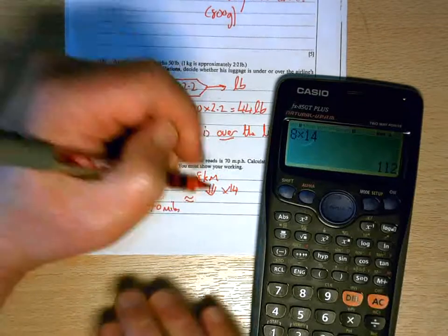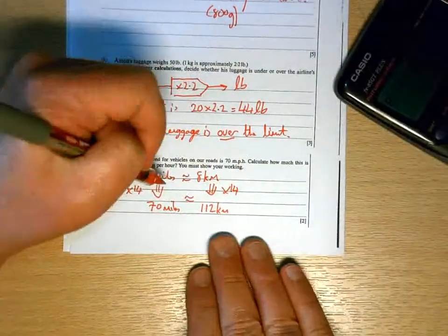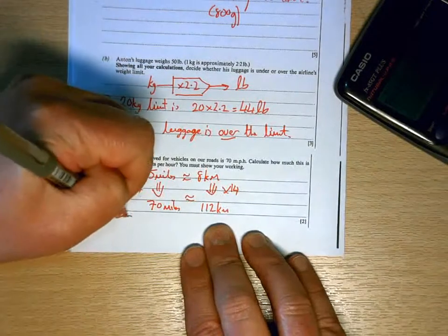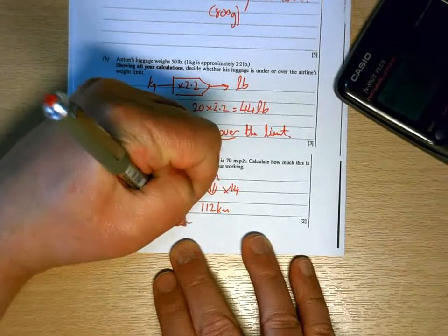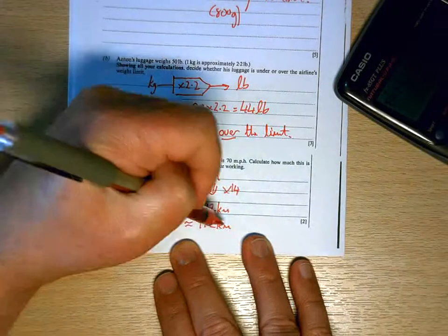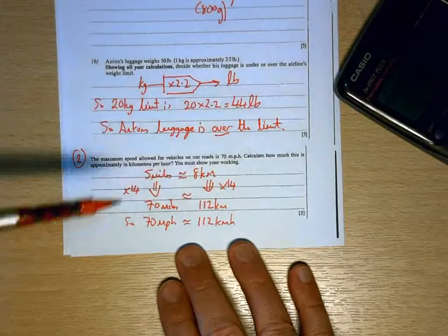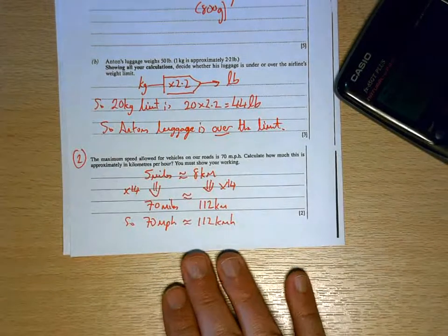So if it's 70 miles, it's 112 kilometers. So 70 mph, miles per hour, is about 112 kilometers per hour. Okay, so again, if you don't recall that equivalence, you cannot access that question.